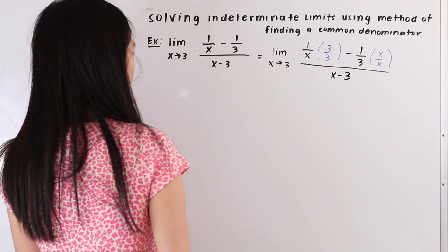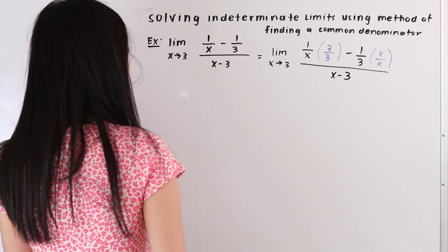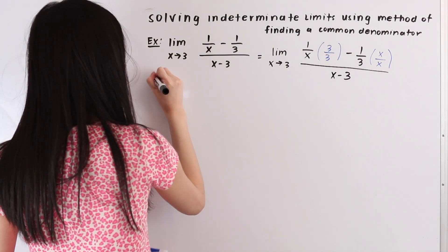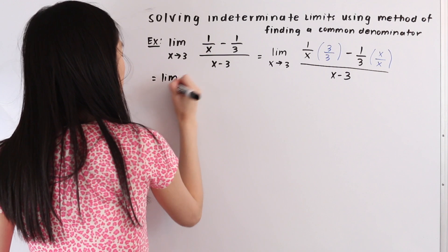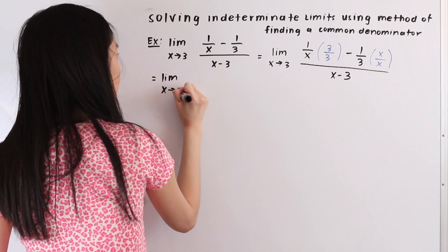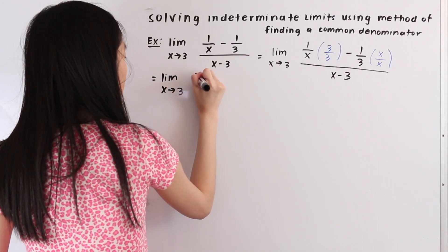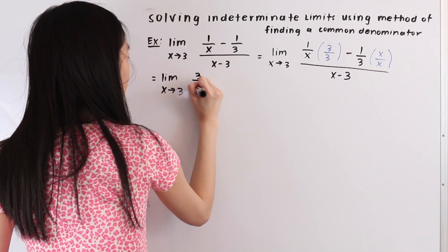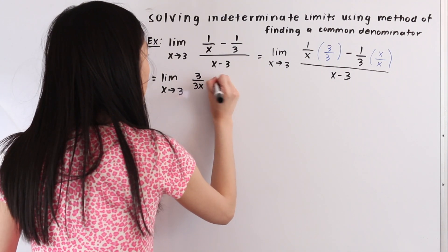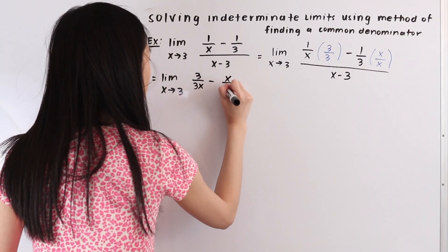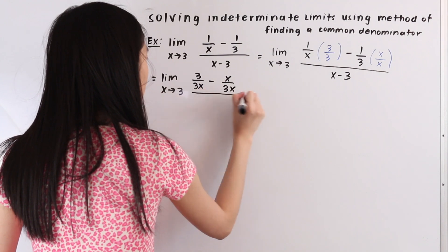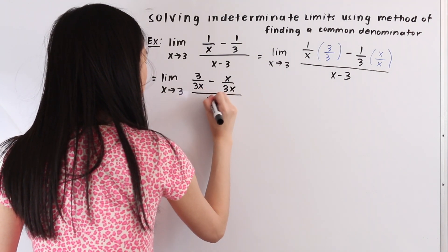Now let's go ahead and multiply this out. So doing that we have the limit as x approaches 3 of 3 minus x over 3x, and this is all over x minus 3.